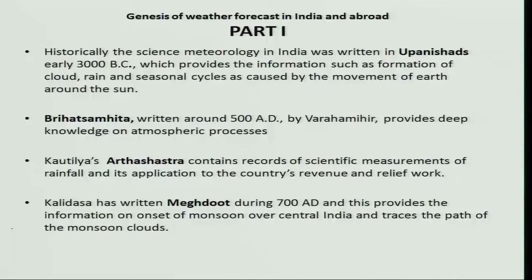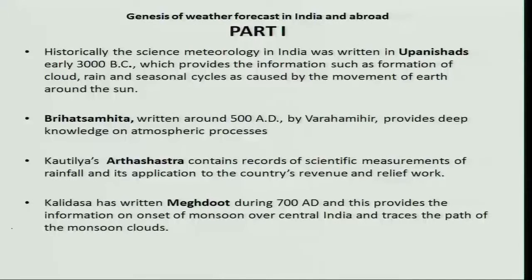Historically, the science of meteorology in India was written in several ancient texts. The first is the Upanishad, written around 3000 BC, which provides information on the formation of clouds, rain, and seasonal changes caused by the movement of the earth around the sun. The second is the Braga Sankita, written around 500 AD by Varahamihira, which provides knowledge on atmospheric processes. The third is Kautilya's Arthasastra, which contains records of scientific measurement of rainfall.